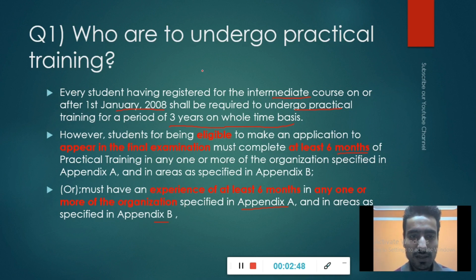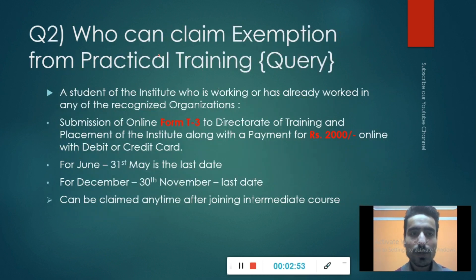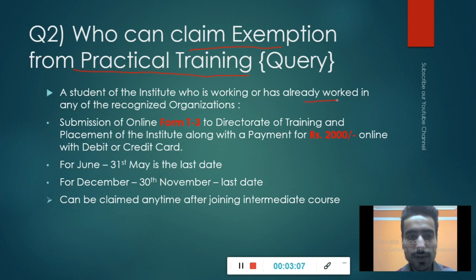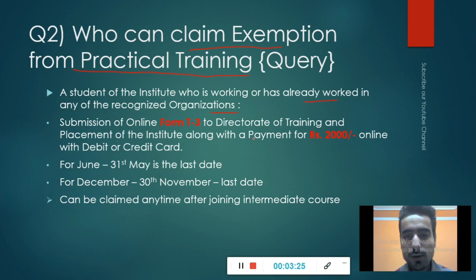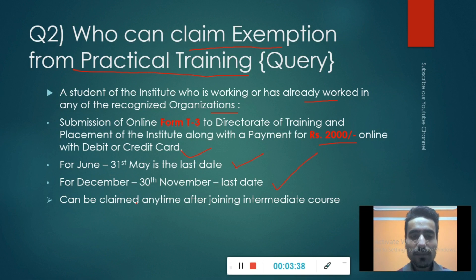The second question is: Who can claim exemption from practical training? A student of the institute who is working or has already worked in any of the recognized organizations can claim exemption. You can do this via online form T3 — submission of form T3 to the Directorate of Training and Placement of the institute, along with a payment of 2,000 rupees online via debit card or credit card. The last date is 31st May for June examinations and 30th November for December examinations. Exemption can be claimed any time after joining the intermediate course.